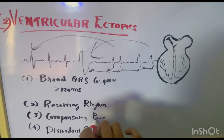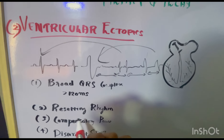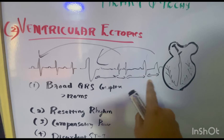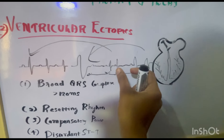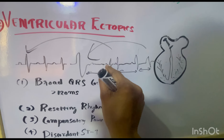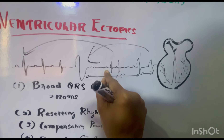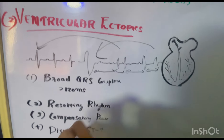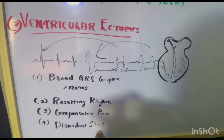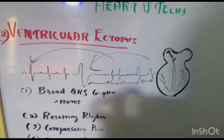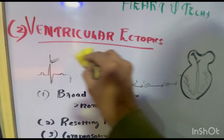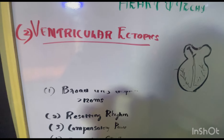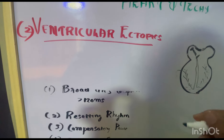When a ventricular ectopic comes, the heart must reset the whole rhythm to continue back to normal. That is what is happening. Then there is a compensatory pause. To reset the rhythm, different pauses occur — you can see a pause in the rhythm where no QRS or P-waves are happening. This is known as compensatory pause, which is quite common in ventricular ectopics rather than atrial ectopics.